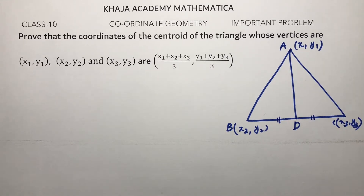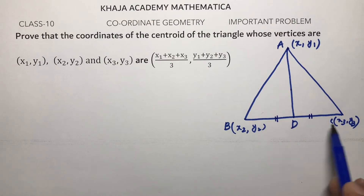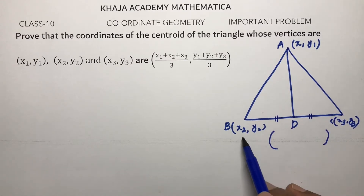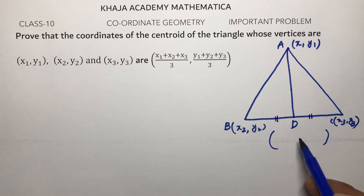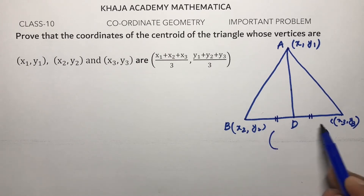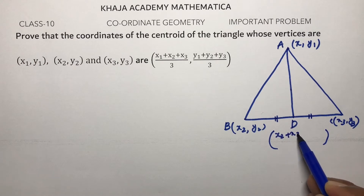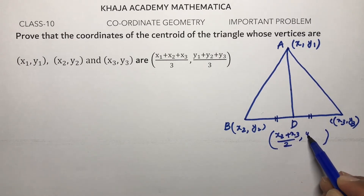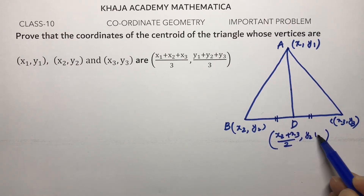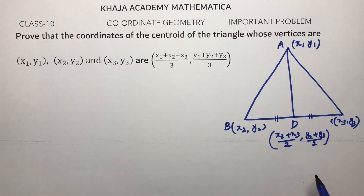The midpoint of BC is D. Using the midpoint formula, D is x2 plus x3 by 2, y2 plus y3 by 2.